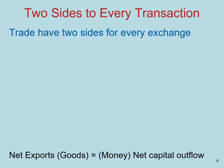Net capital outflow is just the other side of net exports. What you have to remember is that every trade, every purchase has two sides. When you bought lunch recently, you exchanged money — an asset — for a good and service, lunch. So on one end, you have goods and services — net exports — and on the other side, net capital outflows.